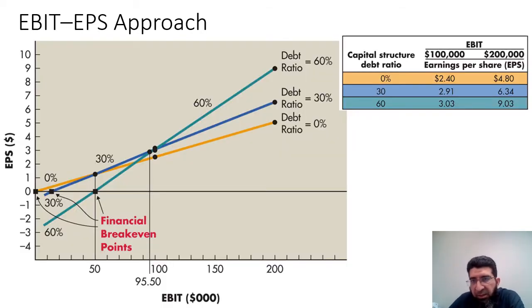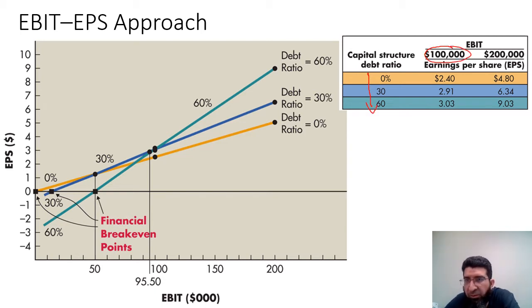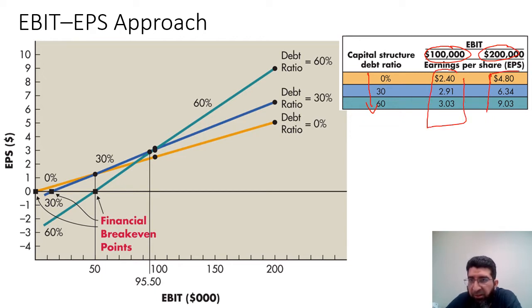You can see that as the capital structure goes from 0% to 30% and 60%, and EBIT is $100,000 or $200,000, in each case these are the EPS values that we will receive.